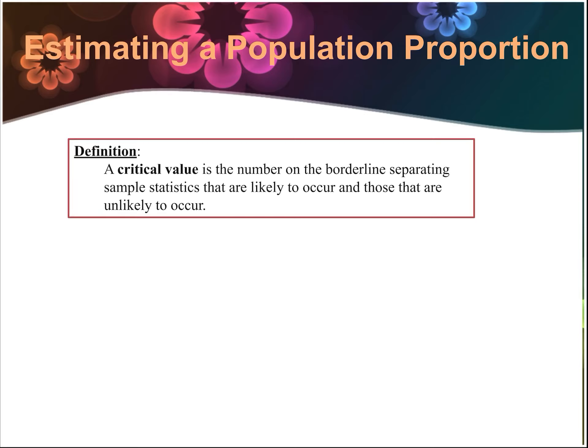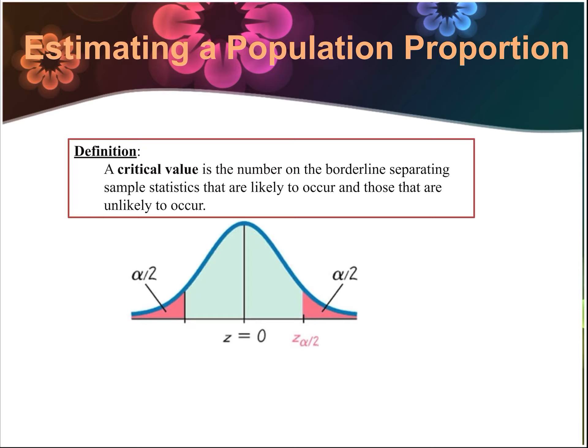A critical value is the number on the borderline that separates sample statistics that are likely to occur and those that are unlikely to occur. A lot of times we're talking about the z-value that separates likely from unlikely, and we use the notation z sub alpha over 2, where alpha is our confidence level.